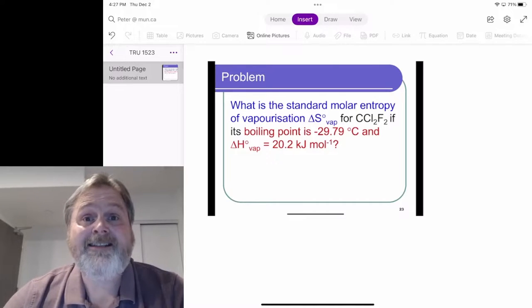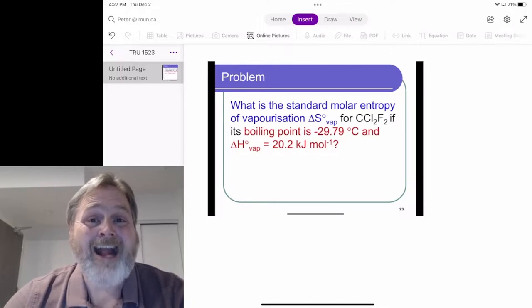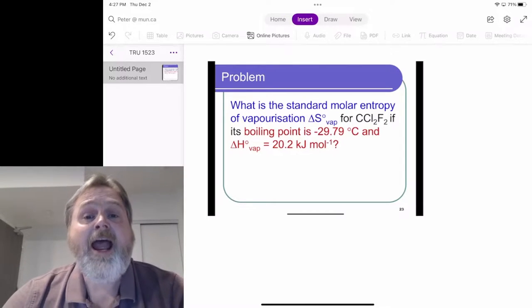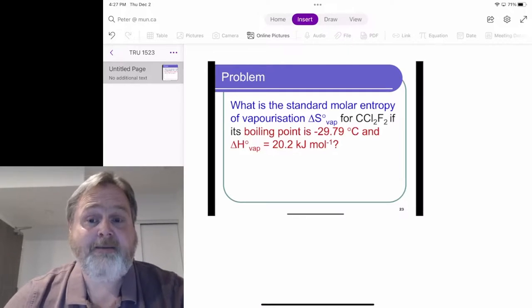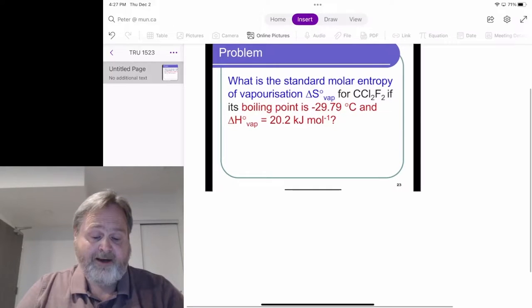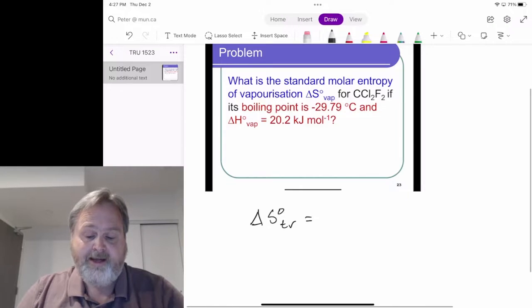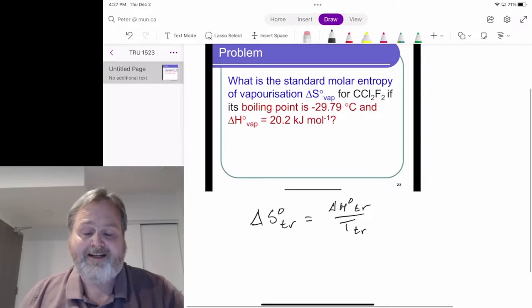Because the change is a reversible process, all we need is the energy, or in this case, the enthalpy of the transition, as well as the temperature that the transition occurs at. The equation says that delta S naught for a transition equals delta H naught for the transition divided by the temperature that the transition takes place.